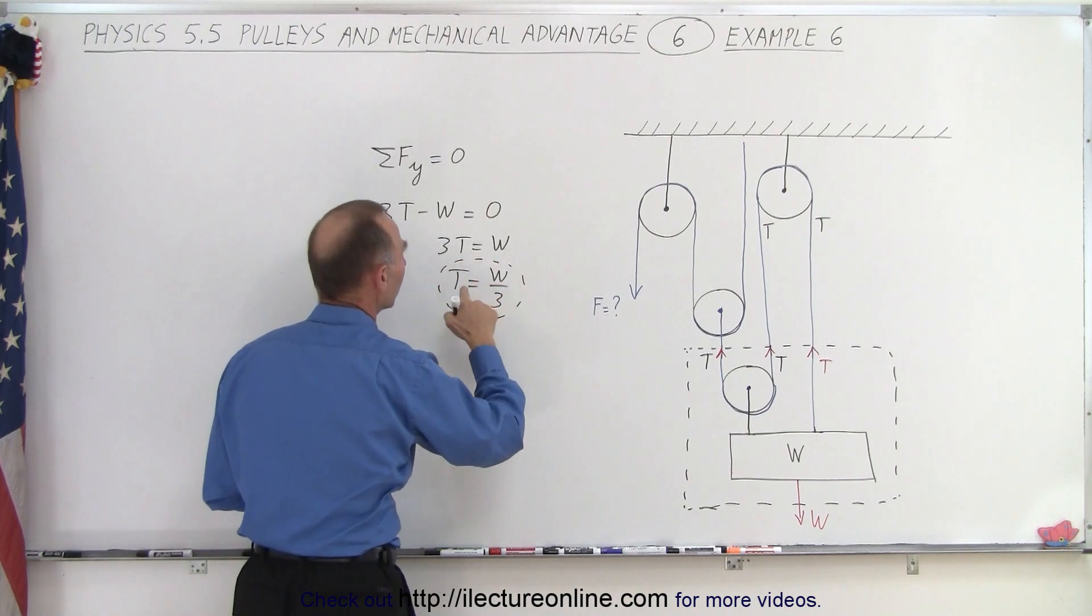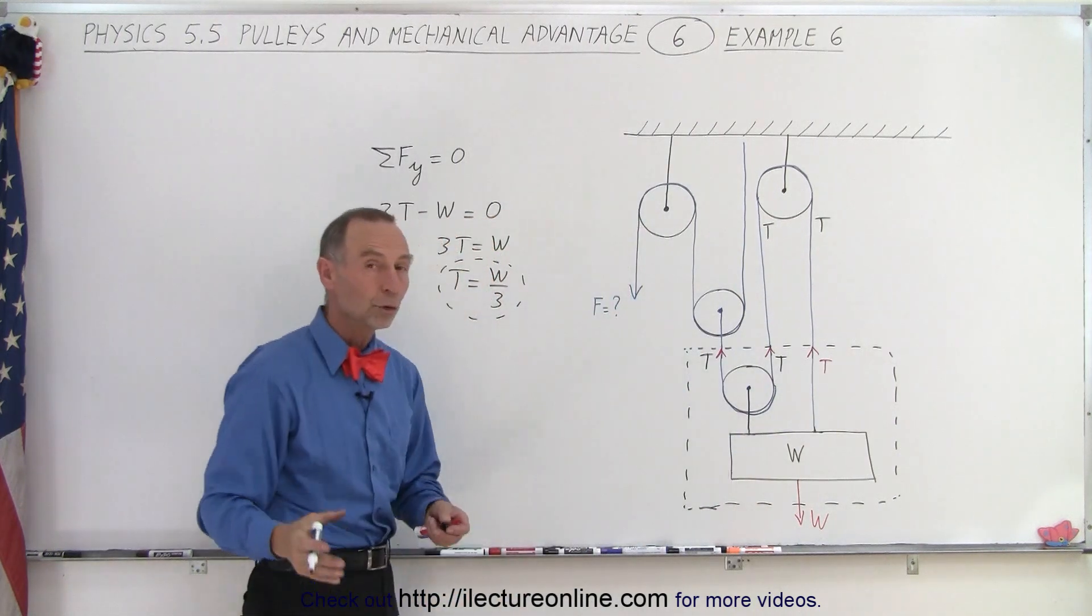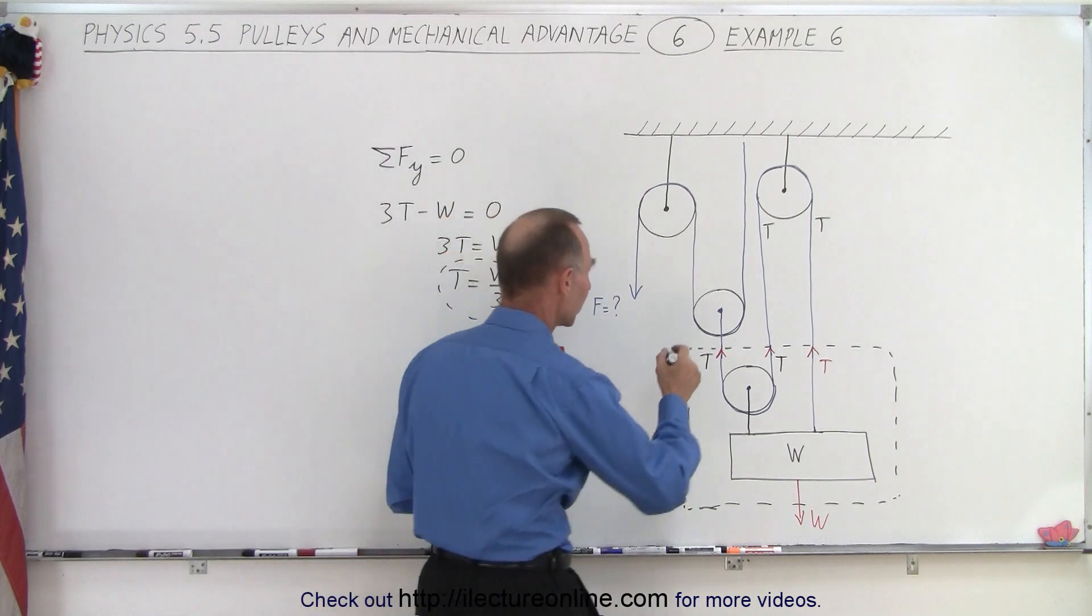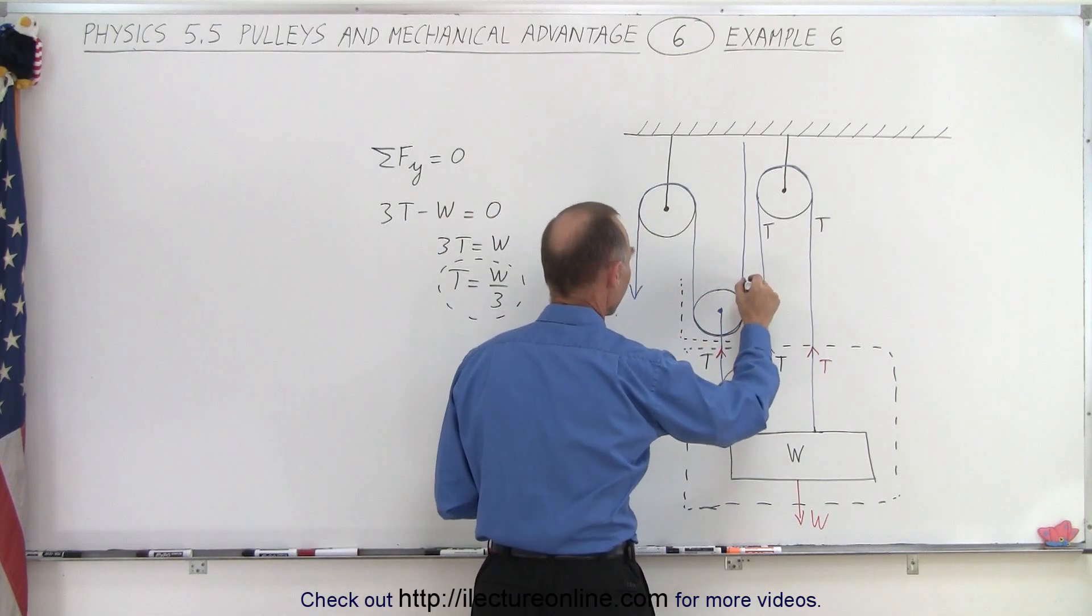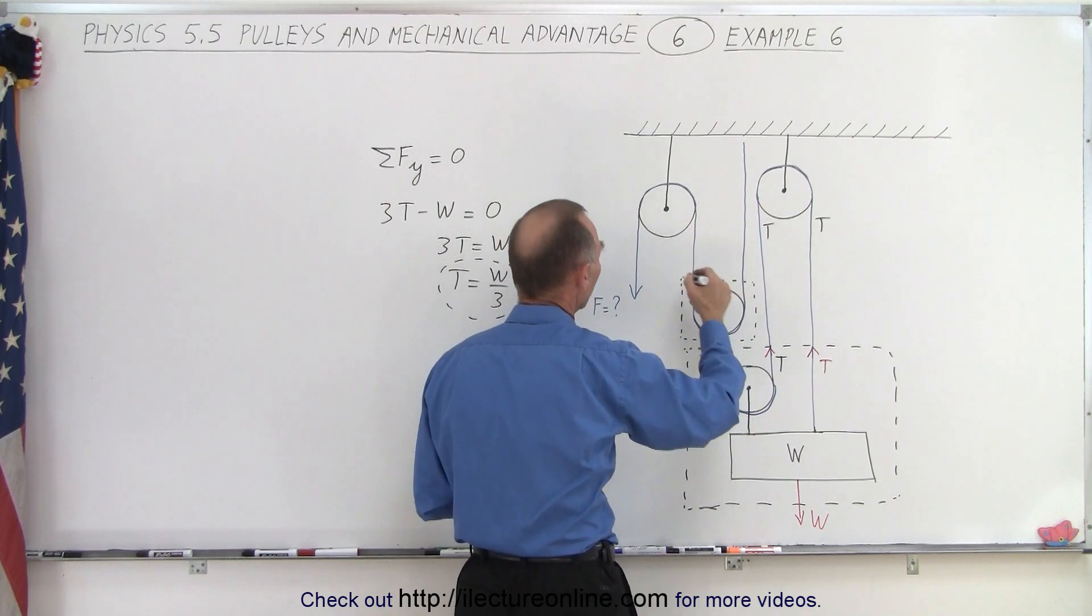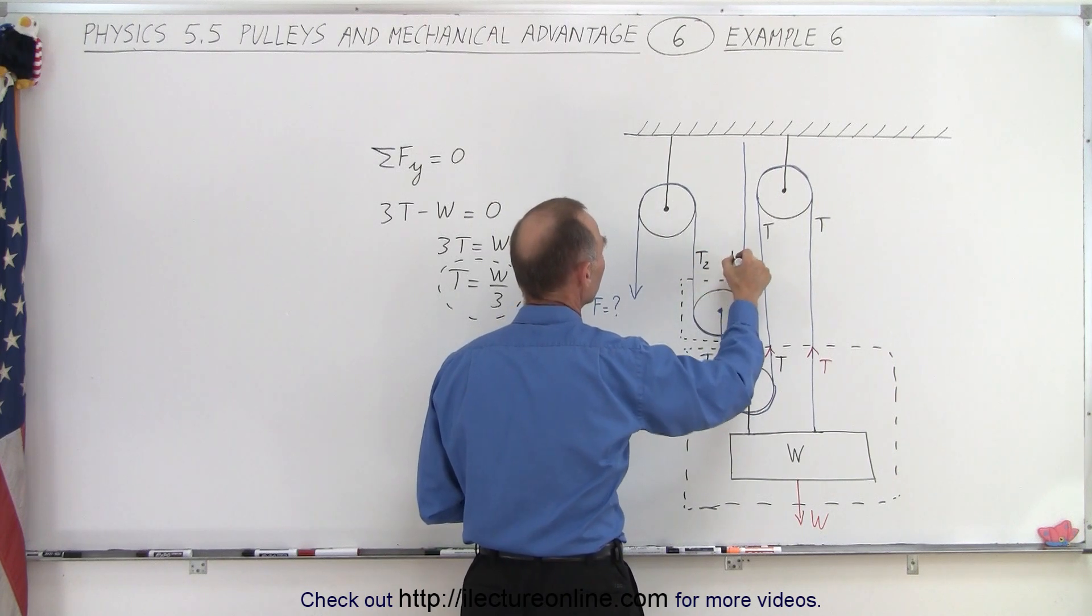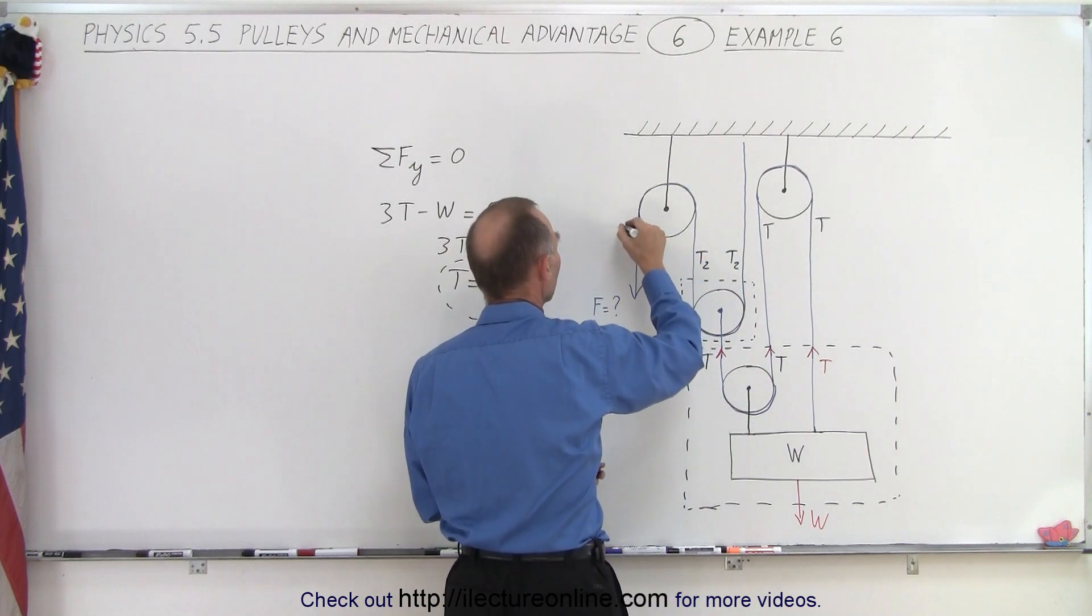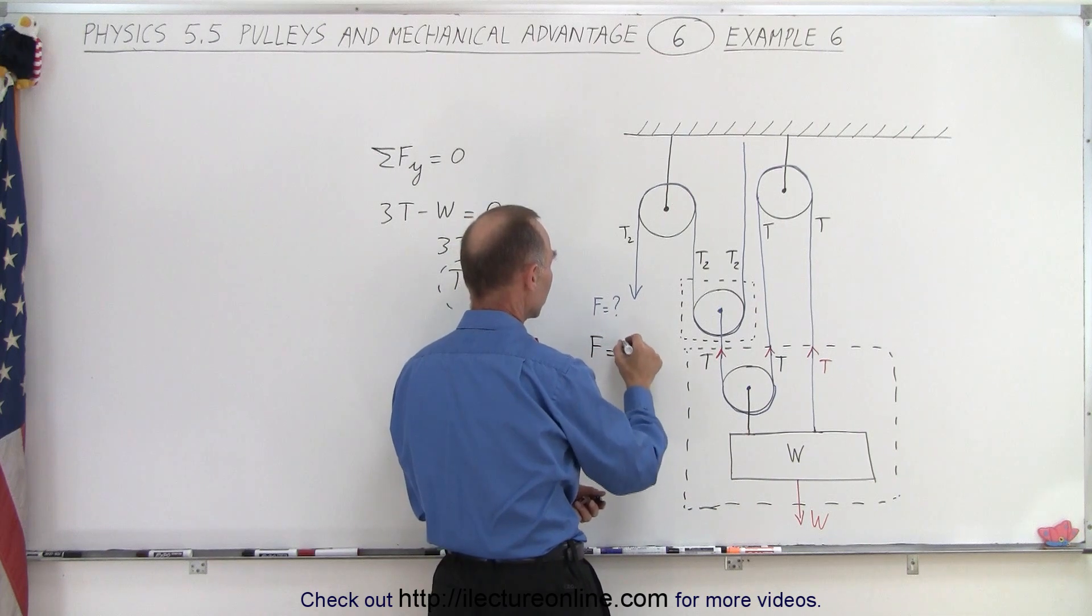In other words, the tension in this string right here is one-third the weight of the object. Then we can draw a free body diagram around here. And then again, we can say that the tension in this string, let's call it T2, and it must be the same on both sides, so T2 must be the same on both sides of the pulley, and around this pulley as well, so it must be the same as on that side of the pulley, which means that the force must equal T2.